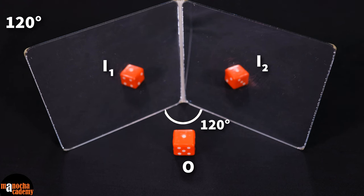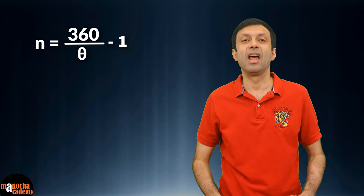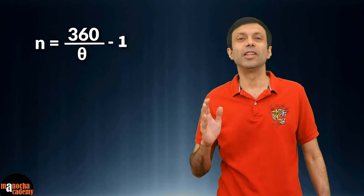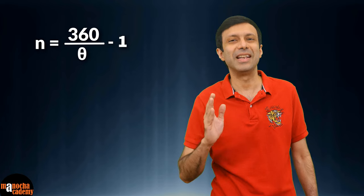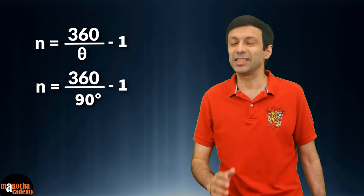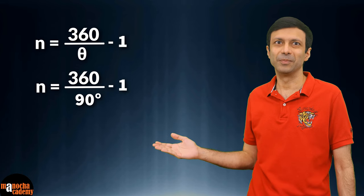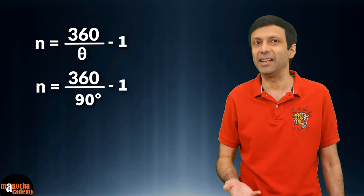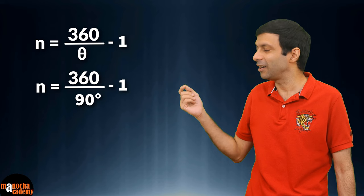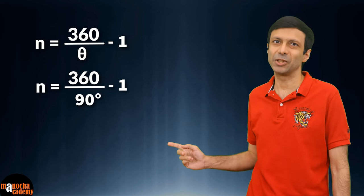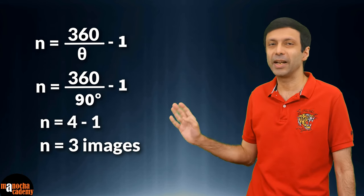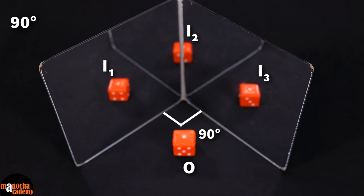Now let's test the formula when the two mirrors are at an angle of 90 degrees. Substituting theta equal to 90 degrees: n = 360 ÷ 90 − 1 = 4 − 1 = 3 images. And as you can see, 3 images are formed when the mirrors are at 90 degrees, perpendicular to each other. Our magic formula is working!